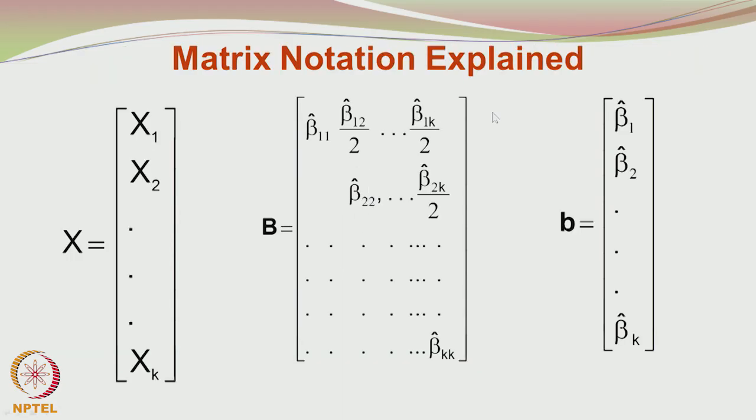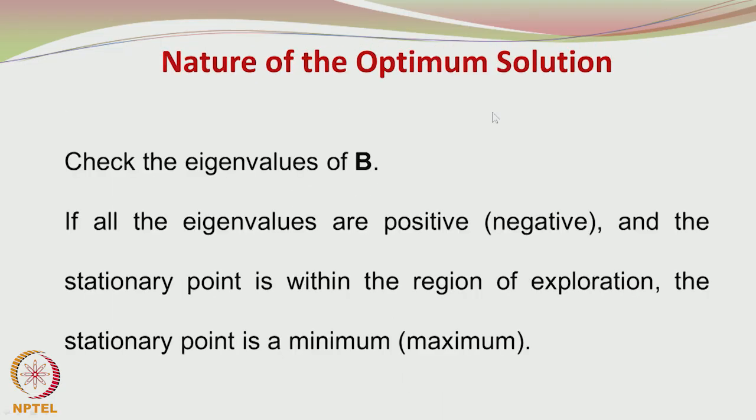We find the eigenvalues of this matrix and if the eigenvalues are all positive, then the stationary point in the region of explanation is a minimum. If the eigenvalues are negative, then we have hit upon the maximum. Again, there will be some complications when you have one eigenvalue which is positive and another eigenvalue which is negative. I will not get into these complications, but I think there is sufficient unexplored uncharted territory as far as the student is concerned, which he can get into and learn at his own pace.